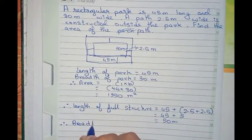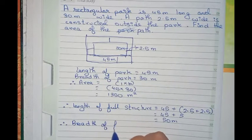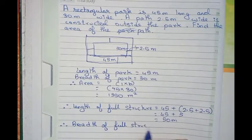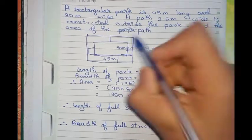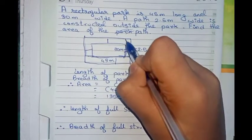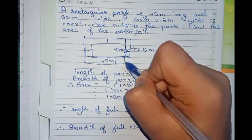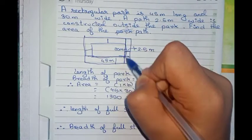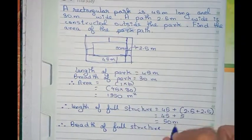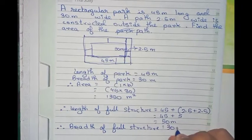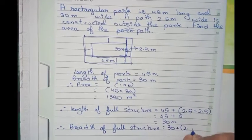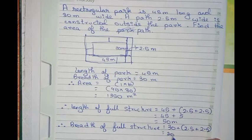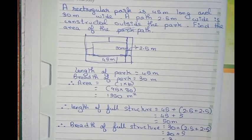Now, the breadth of the full structure equals: if we take the full breadth, we have to add these two sides. That is 30 plus 2.5 plus 2.5, so it becomes 30 plus 5, that is 35 meters.